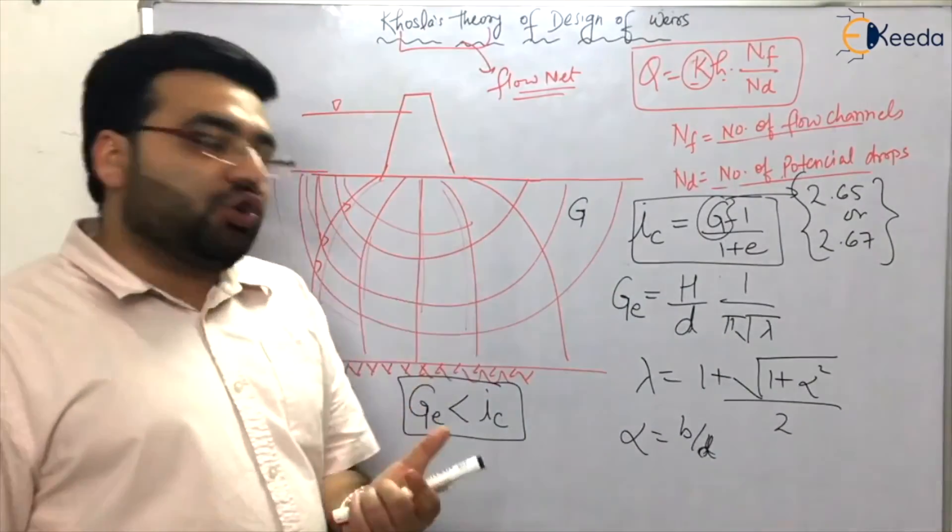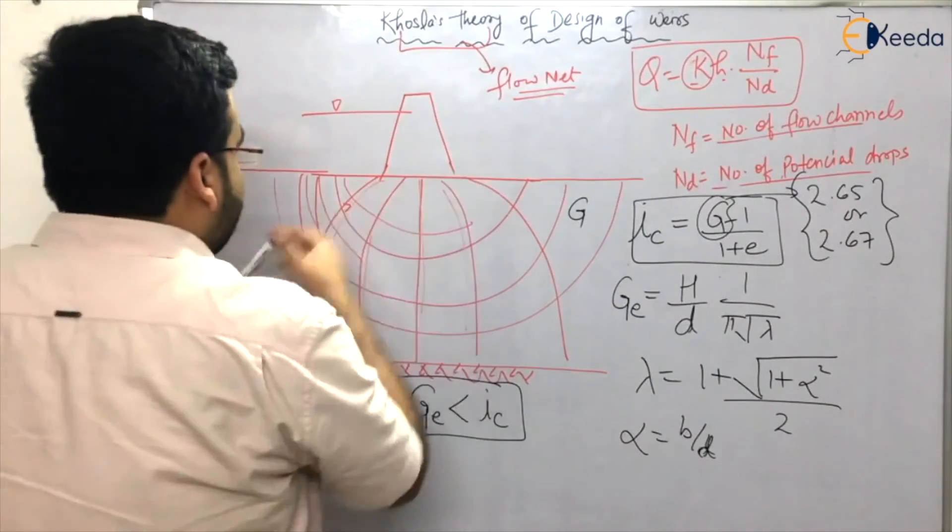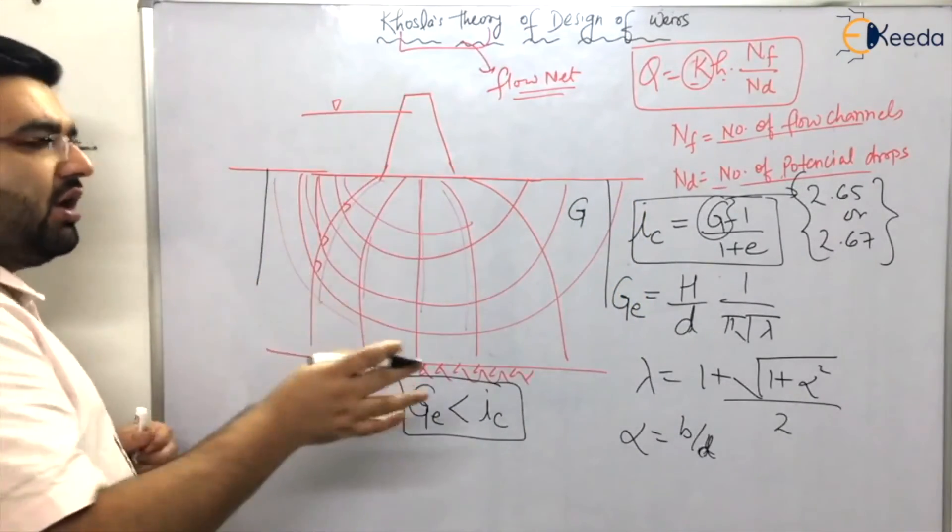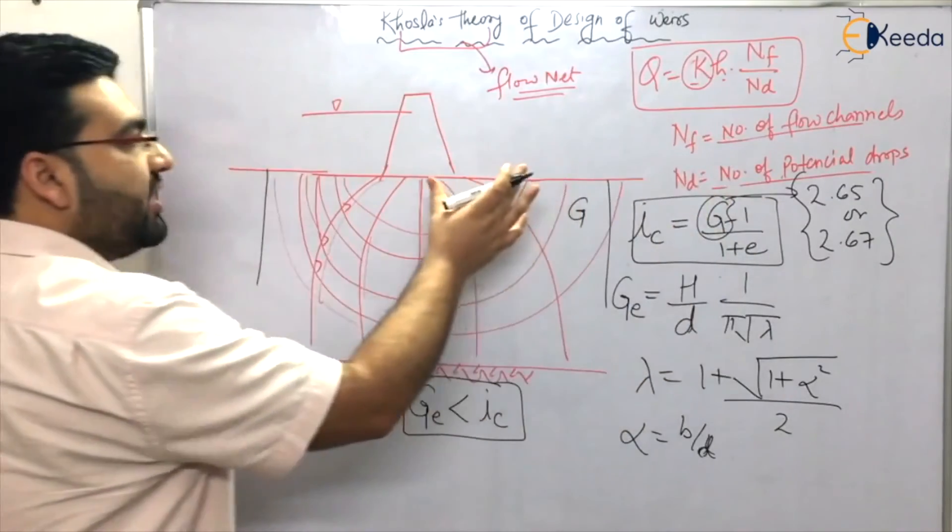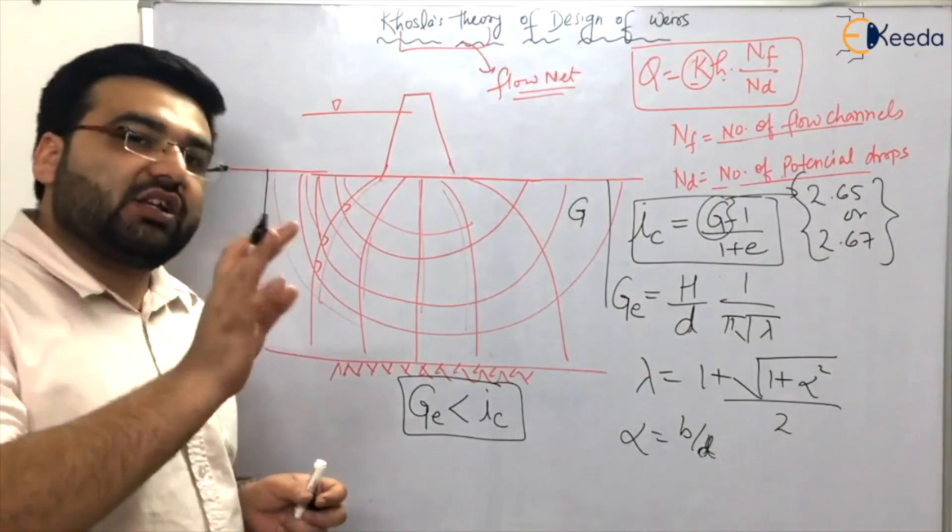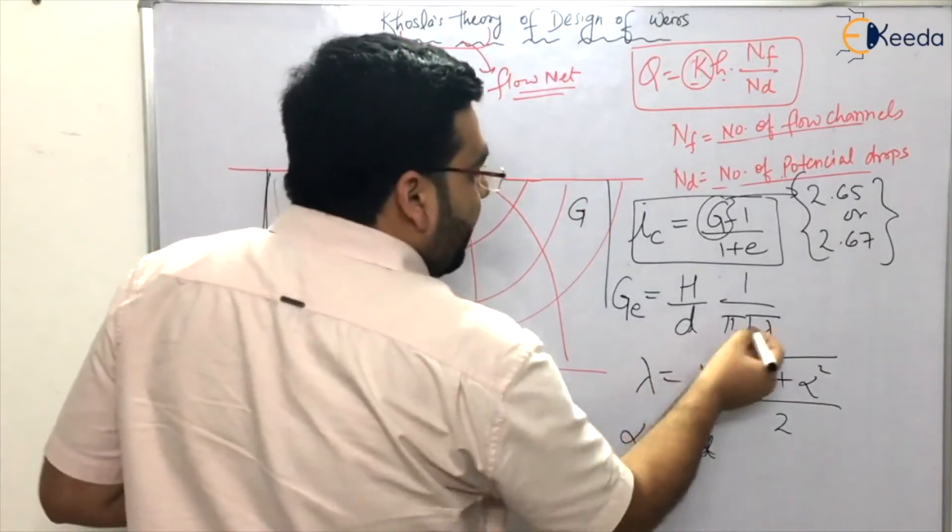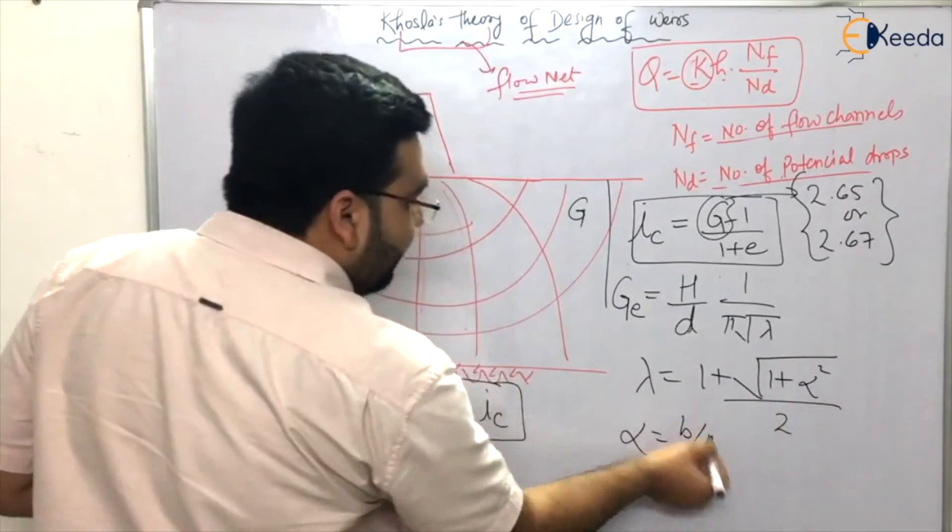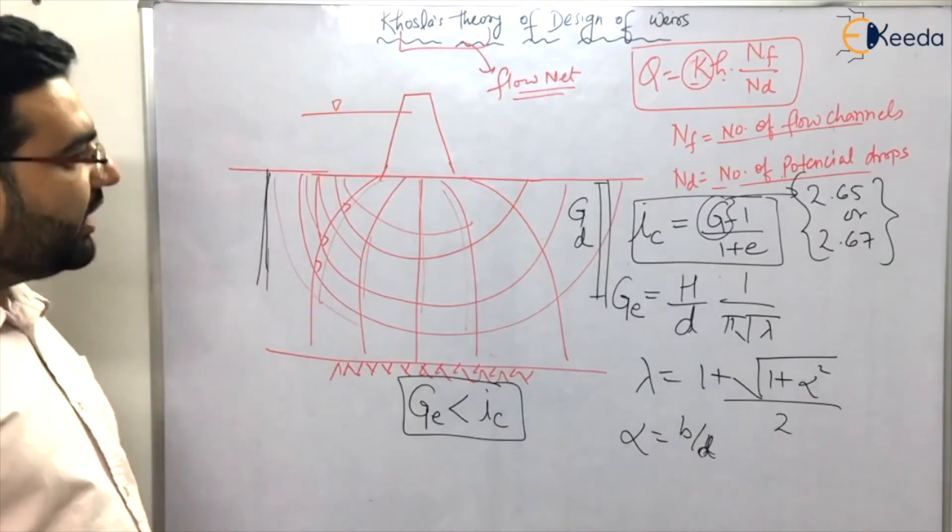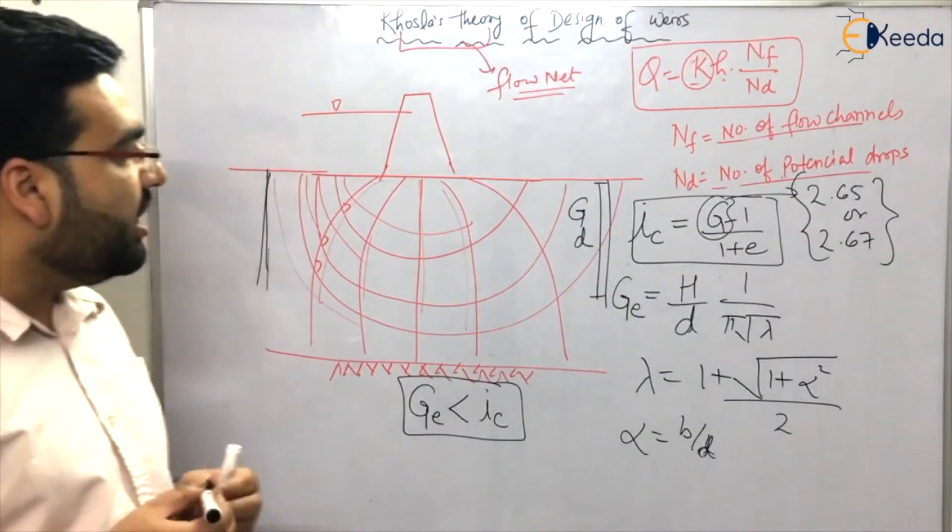Let's say there is a sheet pile here and also here. This is the hydraulic structure I've drawn, but for Khosla's theory you have to consider the previous structure I drew for Blick script theory. We have the sheet pile here and here. Alpha is b/d, where b is the width and d is the depth. That's how you can get the value of exit gradient as well as the critical gradient. Now let's move forward and solve a numerical based on Khosla's theory.